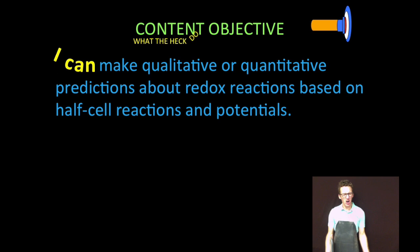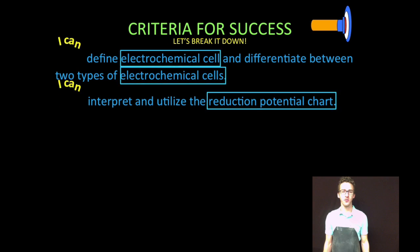Hey, what's up my chemistry people? Number one, we're going to define electrochemical cells - what the heck is that crazy sounding thing? - and differentiate between two different types of electrochemical cells. And then numero dos, we're going to interpret and utilize something called the reduction potential chart.